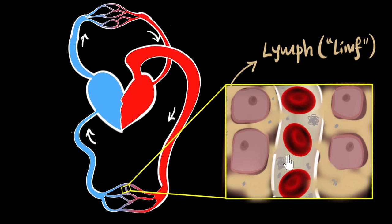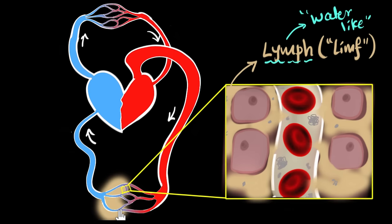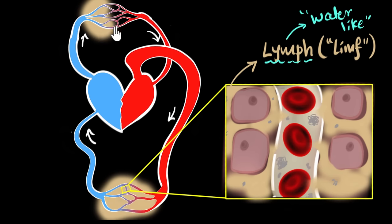So how is lymph different from blood? Well, lymph does not have RBCs in it. As a result, lymph is pretty much colorless. In fact, the word lymph comes from Latin, meaning water-like — and it's called water-like because it is colorless. This means wherever these capillaries are present, plasma will ooze out to form lymph. And since capillaries are found all over our body, you will find this lymph pretty much everywhere inside your body.